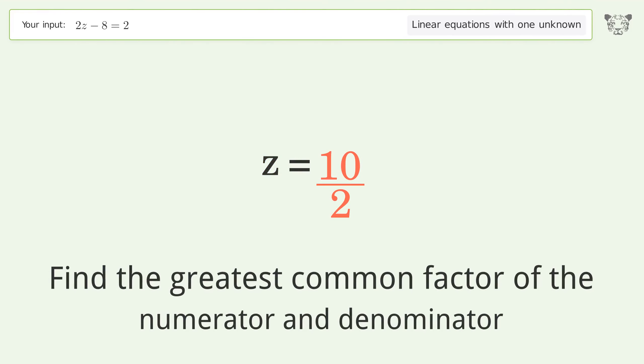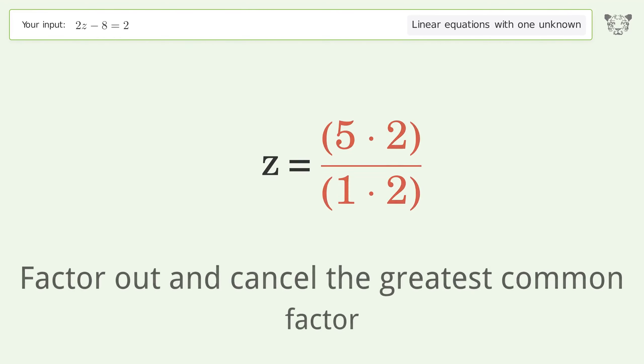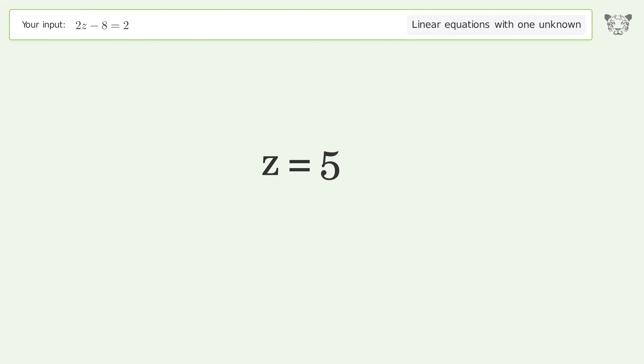Find the greatest common factor of the numerator and denominator, then factor out and cancel the greatest common factor. And so the final result is z equals 5.